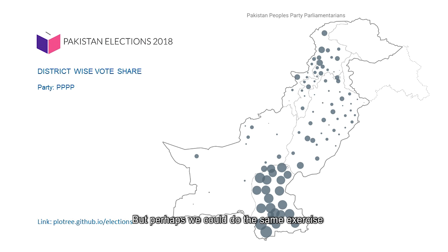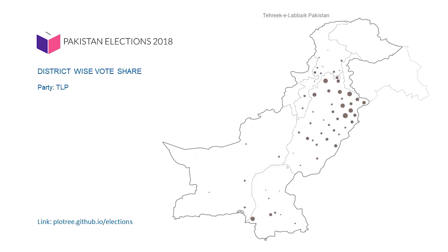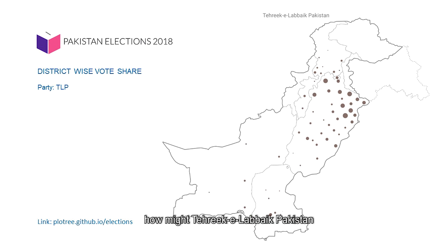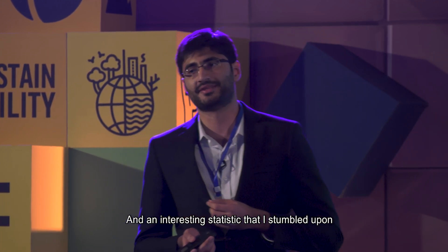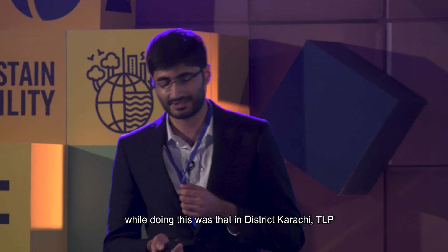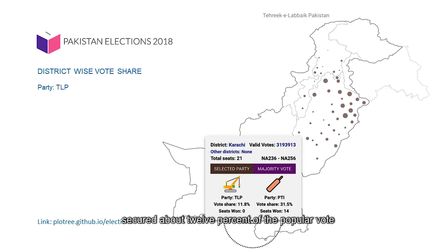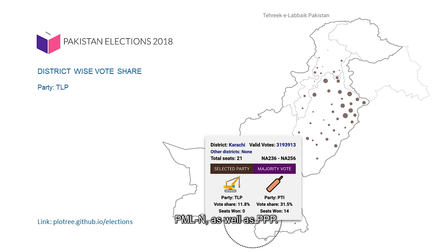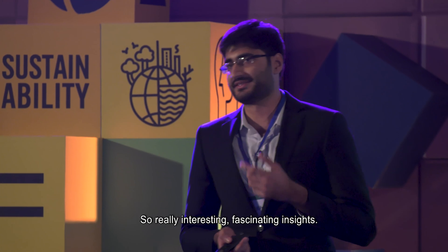We could do the same exercise for TLP and ask how Tehreek-e-Labaik Pakistan might have broken the vote of any other major political party — which was quite a debate in the media. An interesting statistic I stumbled upon was that in District Karachi, TLP secured about 12% of the popular vote, which is higher than that of MMA, PMLN, as well as PPP. Really interesting, fascinating insights.